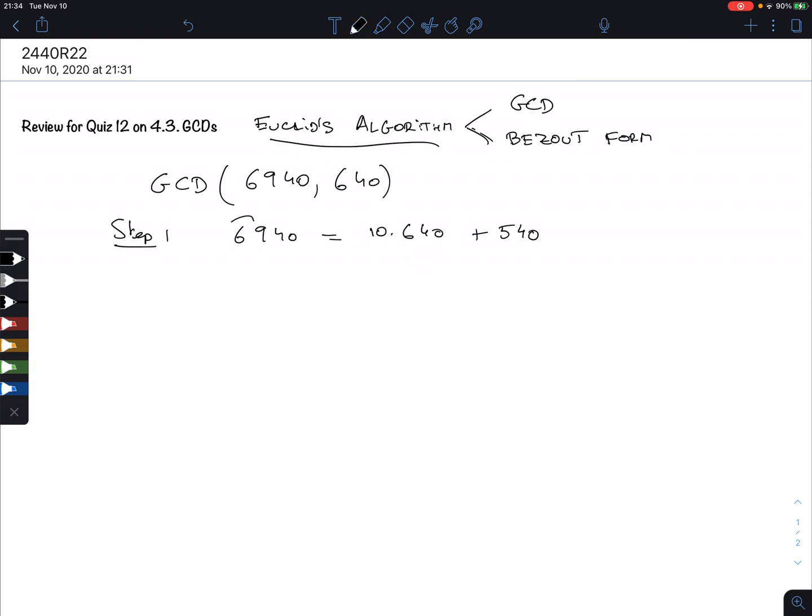I'm going to circle my numbers. In this step it's not really necessary, but in the backward step it's very important to separate the numbers you use in the various steps—the original two numbers and the various remainders that appear. Now we use these two, 640 and 540. This goes in one time and what is missing is 100.